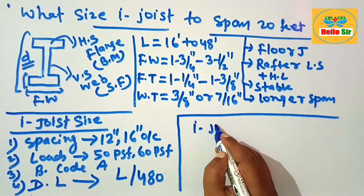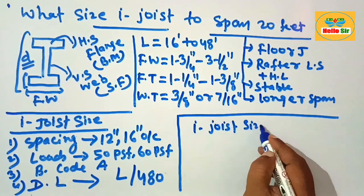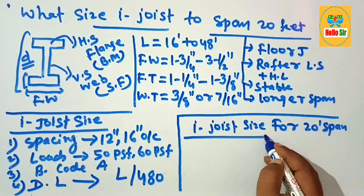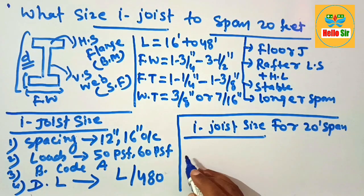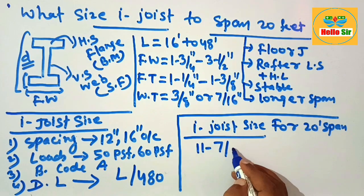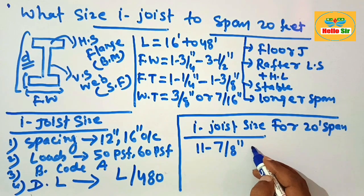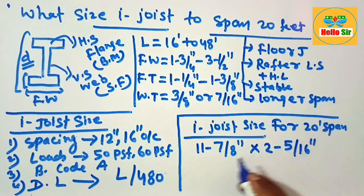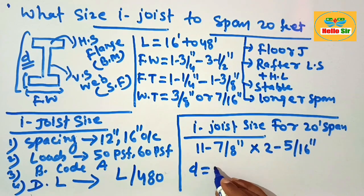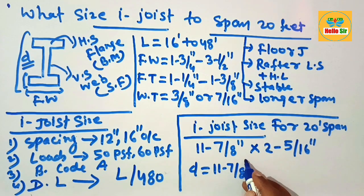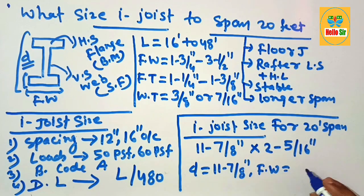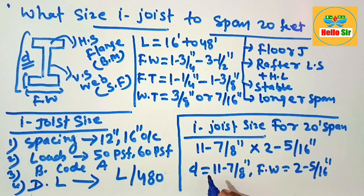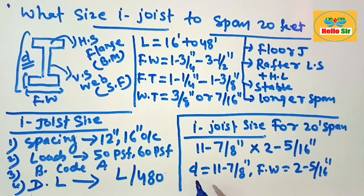Now the I-joist size for 20 feet. The I-joist size required to span 20 feet should be 11 and 7/8 inch depth with a flange width of 2 and 5/16 inches. This dimension of I-joist is required to span 20 feet. Thank you.